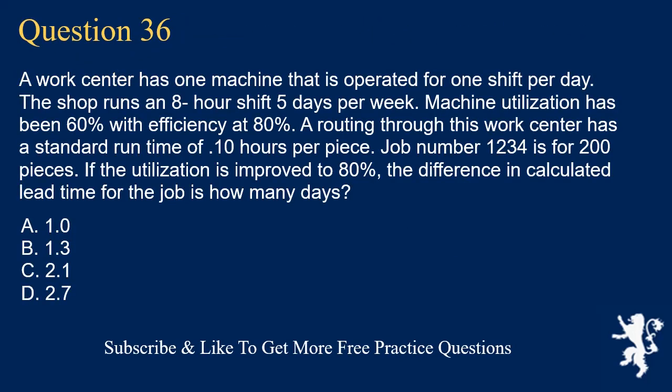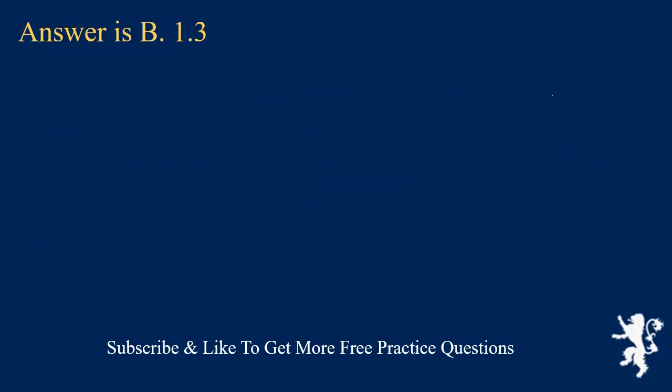Question 36. A work center has one machine operated for one shift per day. The shop runs an eight-hour shift five days per week. Machine utilization has been 60% with efficiency at 80%. A routing through this work center has a standard run time of 0.10 hours per piece. Job number 1234 is for 200 pieces. If the utilization is improved to 80%, the difference in calculated lead time for the job is how many days? A. 1.0. B. 1.3. C. 2.1. D. 2.7. Answer is B. 1.3.